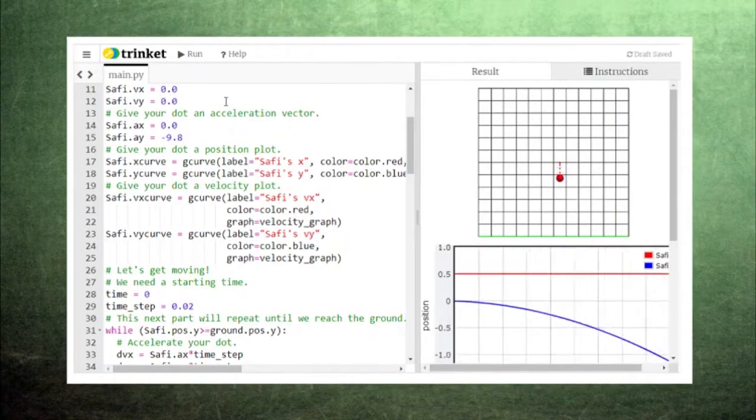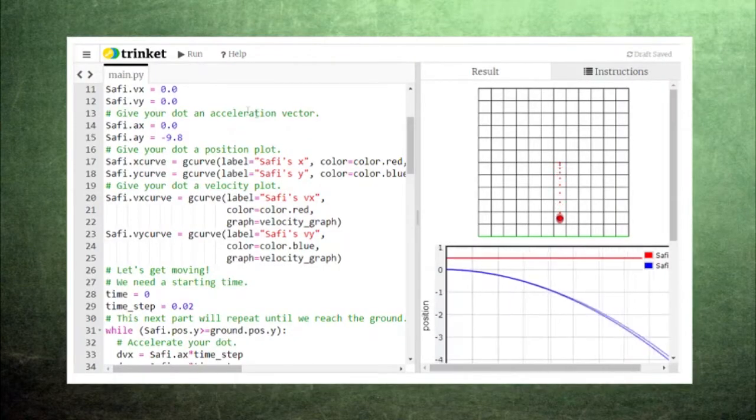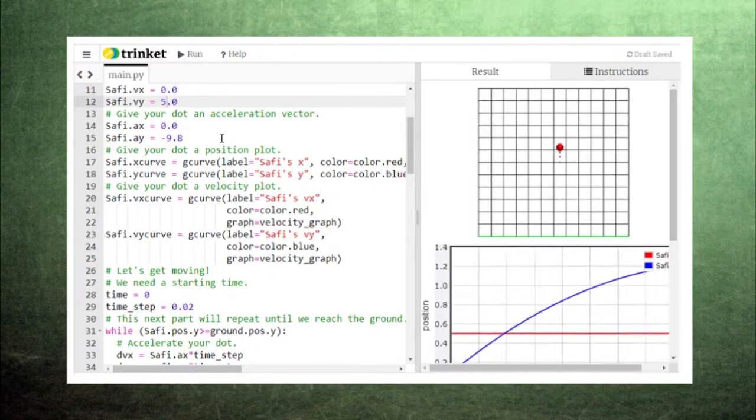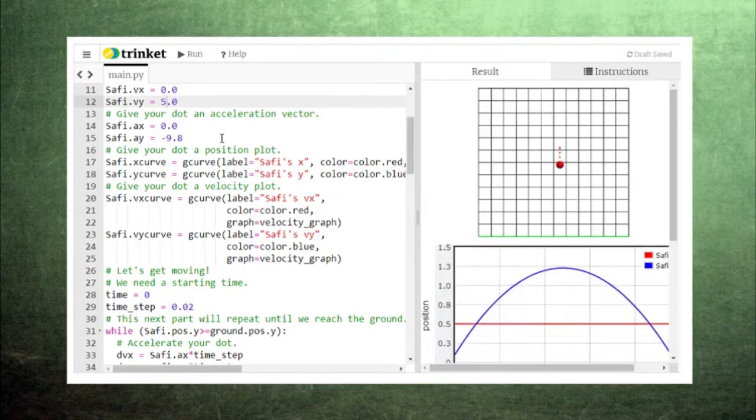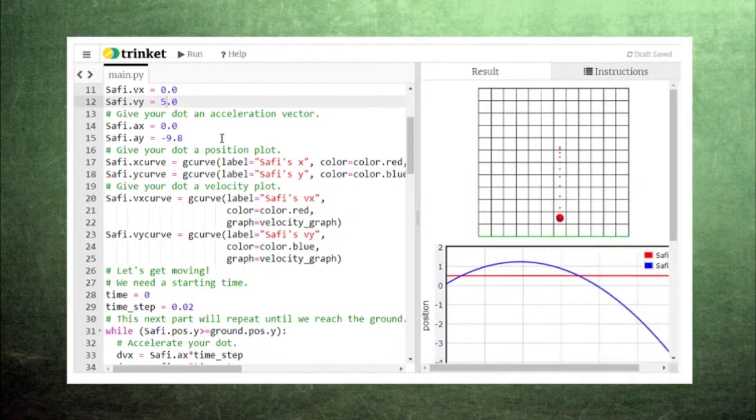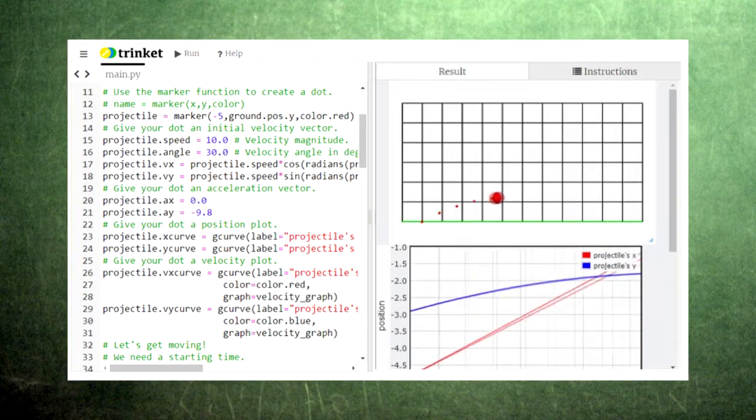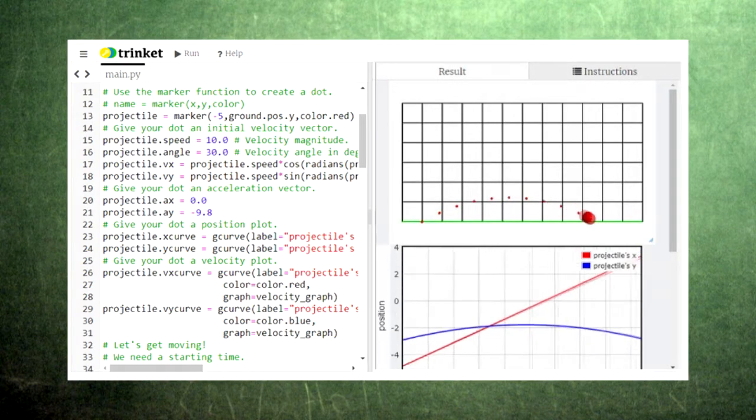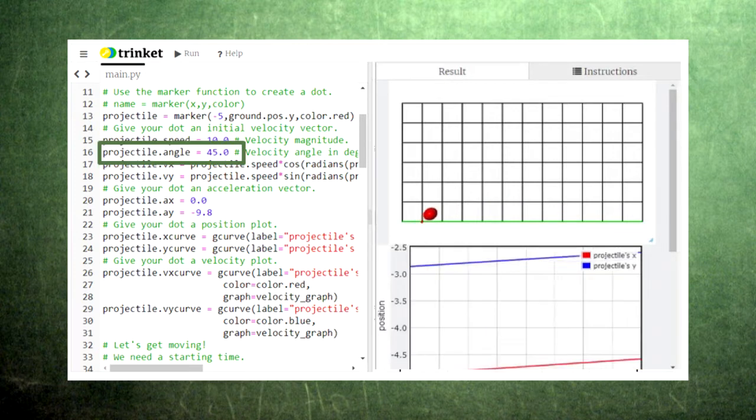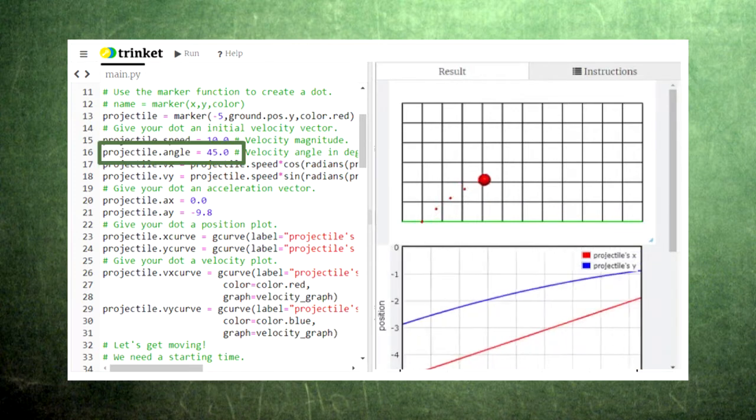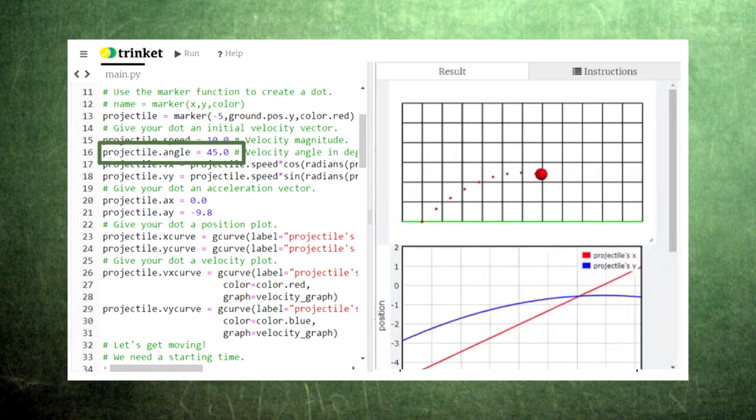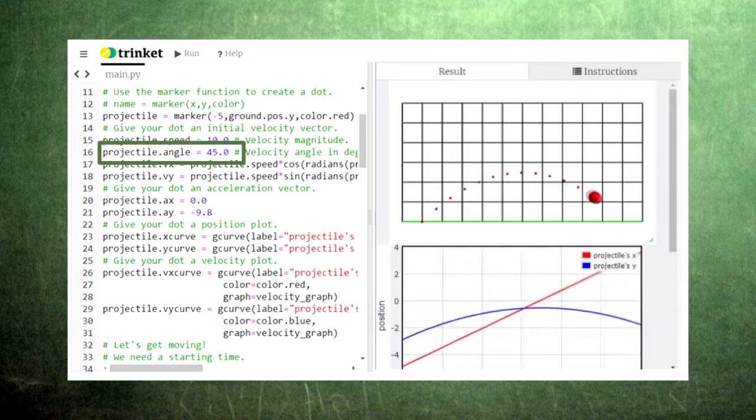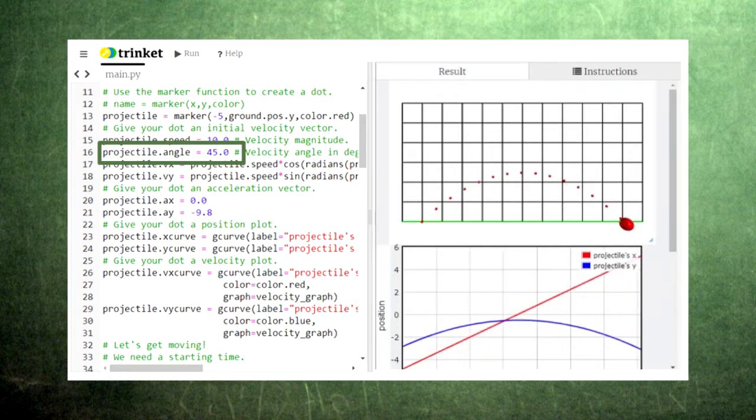We've created a lot of animations using acceleration. Once we specify the initial position and velocity of a marker, the acceleration tells us how the marker's velocity changes, which tells us how the marker's position changes. But in order to study real-world scenarios, we need to know where accelerations come from. In this episode, we'll learn about how accelerations come from forces.